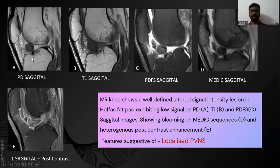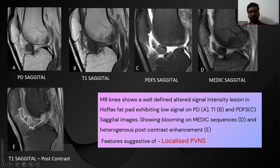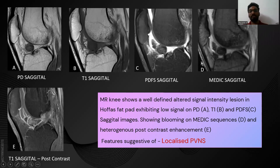In our case, on PD sagittal and T1 sagittal you can see a hypointense mass in the posterior fat pad. On PDFS it is also low signal, and on PD sequence it shows blooming. On post-contrast images, heterogeneous post-contrast enhancement is seen. These features are suggestive of the localized form of pigmented villonodular synovitis.